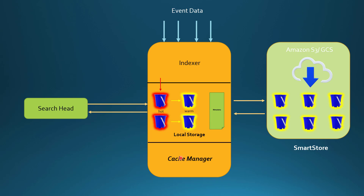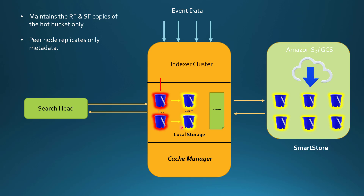In an indexer cluster with Smart Store, the cluster maintains only the hot bucket copies according to the replication factor and search factor copies. Peer nodes in the indexer cluster only replicate the metadata, so the amount of data replicated is very much less compared to having everything in local storage. When adding a new peer or recovering from a peer failure, the recovery time is very low because it needs to sync a lesser amount of data. And if the number of peer failures exceeds the replication factor, we still will not lose any warm bucket data because it is all stored in remote storage.